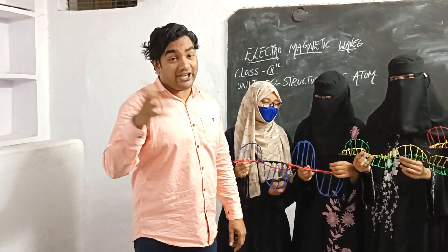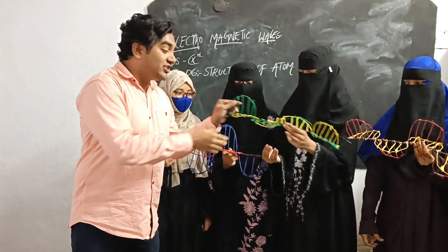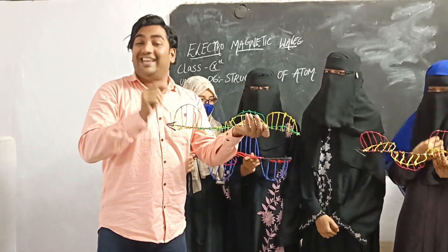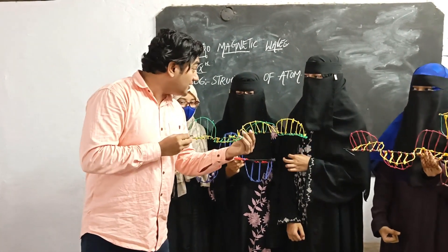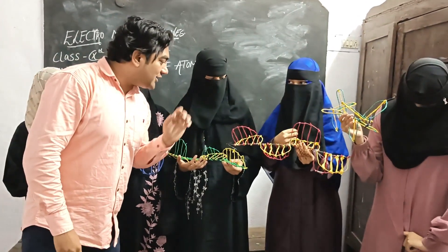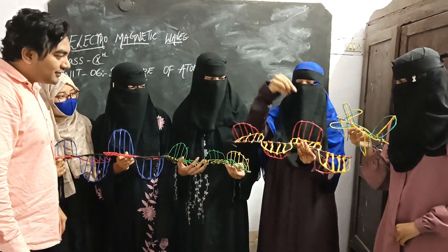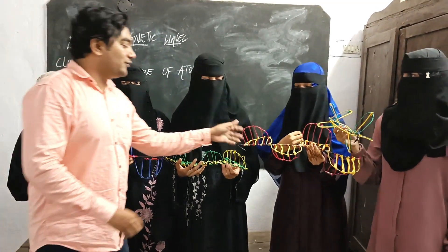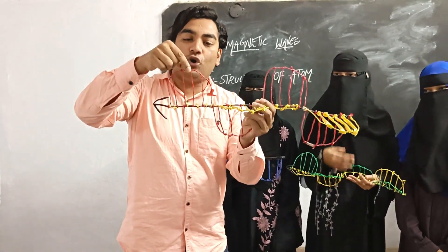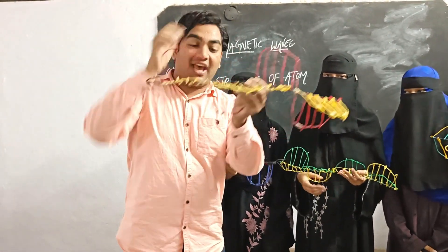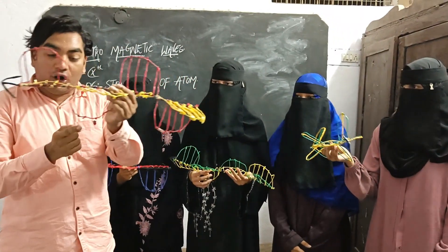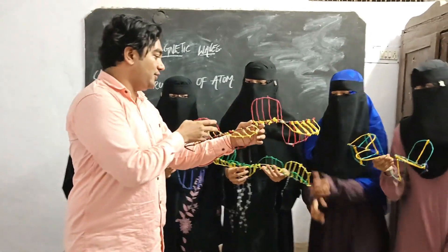The speed of light is 3 into 10 to the power of 8 meters per second. She explained that electromagnetic waves also have the same speed equal to the speed of light, that is 3 into 10 to the power of 8 meters per second. From crest to crest is known as wavelength. The tip point of the wave is known as crest and the downside point is known as trough. From crest to crest or trough to trough is known as wavelength.